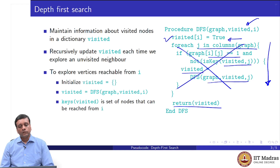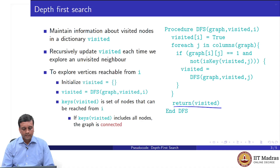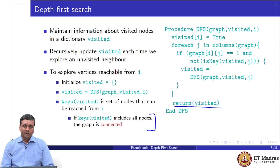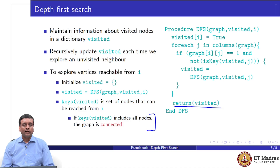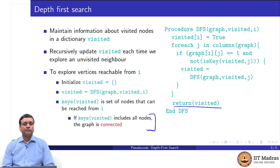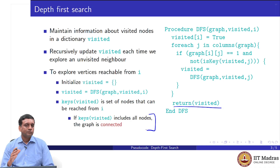Let us understand how this works by looking at an example. If I start with the visited dictionary empty and explore from i, and it comes back with every vertex visited, that means the graph is connected — starting from i, I can reach every vertex. If I do not get back all the vertices, the graph is disconnected, because there are some vertices I cannot reach from i, and those fall into a different group not connected to i.